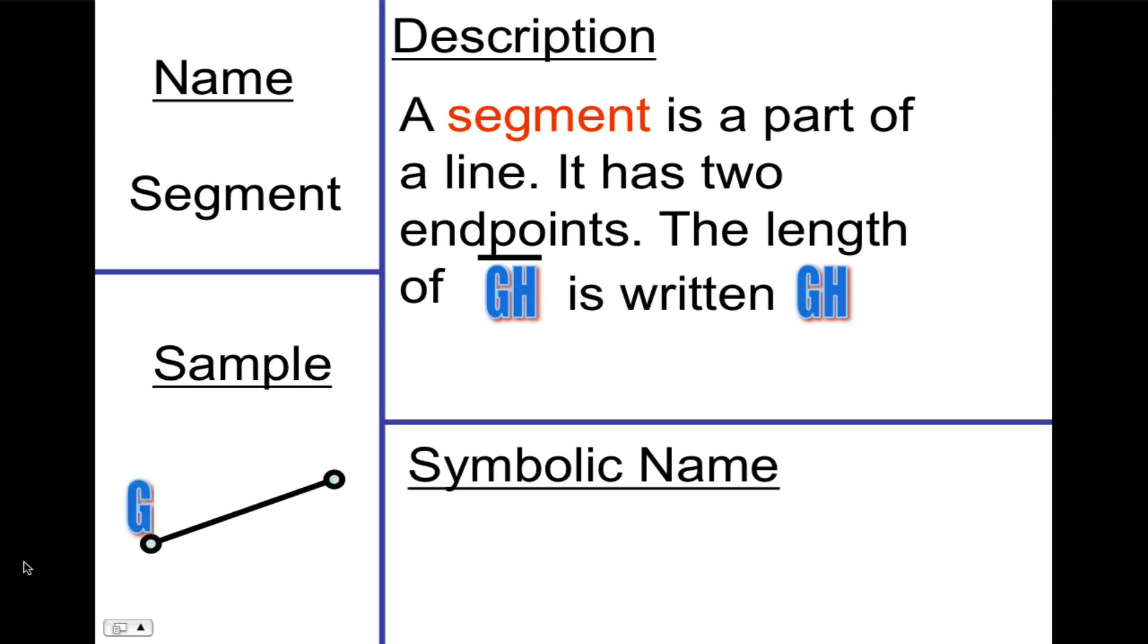So here's a sample of a segment, GH. And symbolically we could call it GH or HG. They name the same segment. So I'm not naming two segments when I say GH and then HG. I'm just naming the same segment twice. Two alternate names.